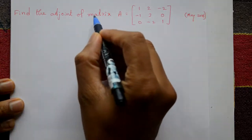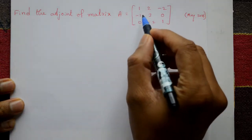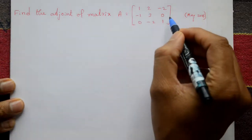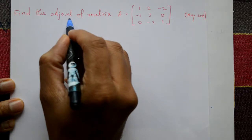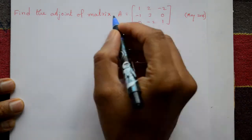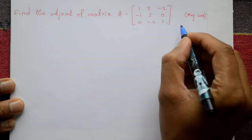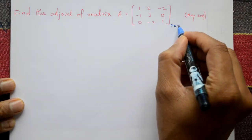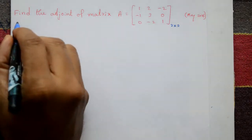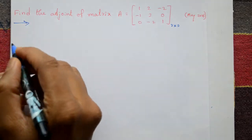Find the adjunct of matrix. Matrix A is given. Now required adjunct of matrix. This matrix is 3 cross 3. Now solution.